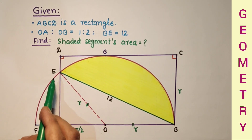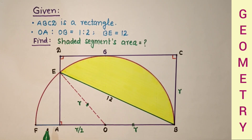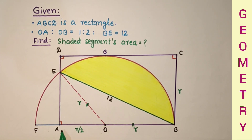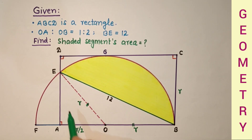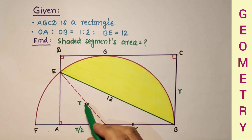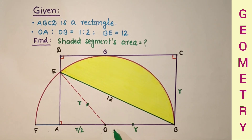Taking triangle EAO, this is a right angle triangle. The hypotenuse is R and one of the legs is R by 2 — half of the hypotenuse. So by the 30-60-90 theorem, this angle must be 30 degrees.